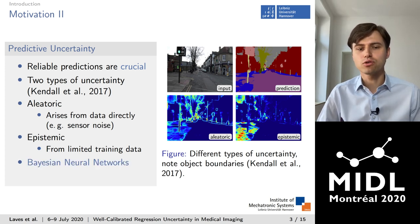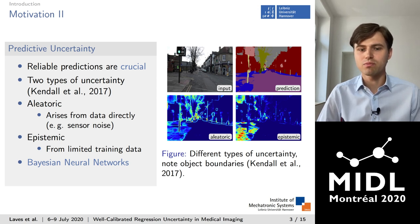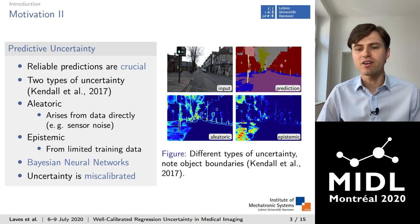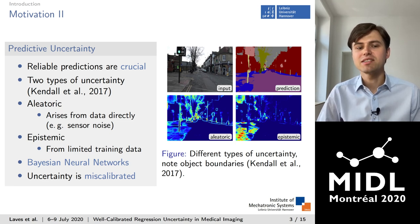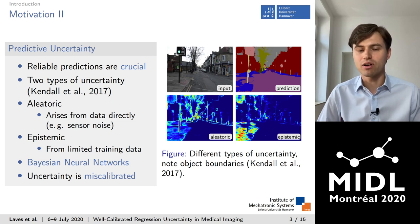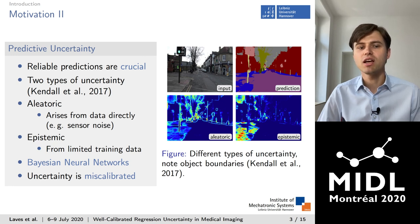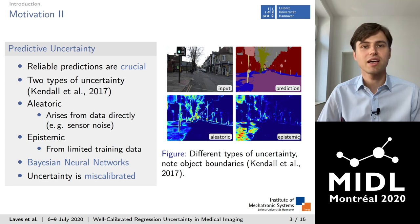Bayesian neural networks provide one mathematical tool to determine uncertainties and to recognize unreliable predictions. However, uncertainty obtained by deep Bayesian nets tends to be miscalibrated — that is, it does not correspond well with the model error. The predictive uncertainty, taking into account both types of uncertainty, is underestimated and does not allow robust detection of uncertain predictions at test time.